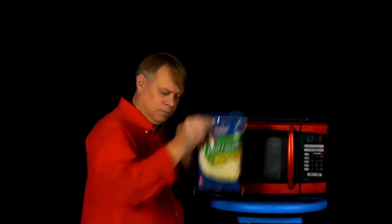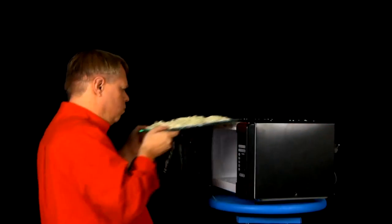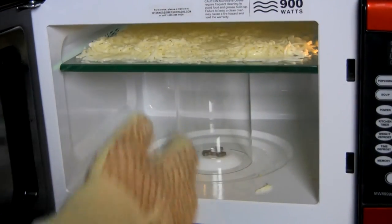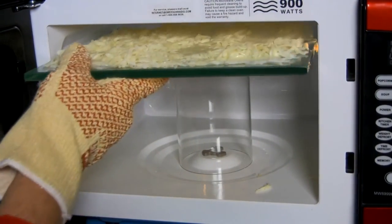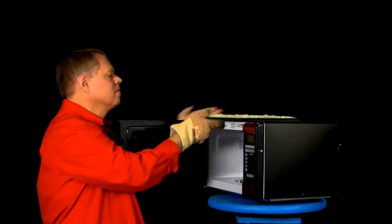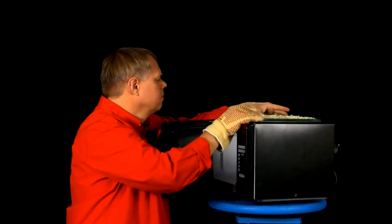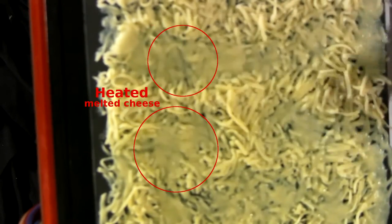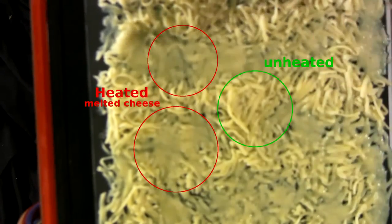You can get an idea of the wavelength of the energy emitted from the magnetron using cheese. You can see on here sections where the cheese is completely melted and other sections where it's completely unheated.